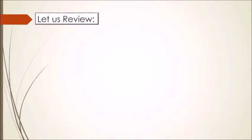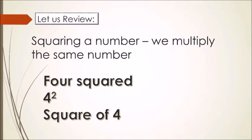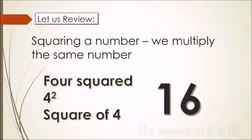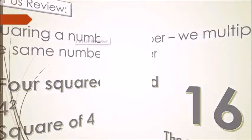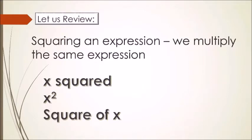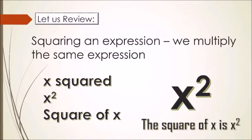But first, let's review: what is squaring a number? If we say squaring a number, we multiply the same number by itself. For example, 4 squared, or 4 raised to 2, or the square of 4, is equal to 16. Another example: x squared, or x raised to 2, or the square of x — so the square of x is x squared.